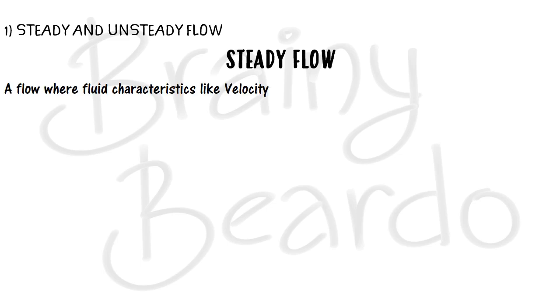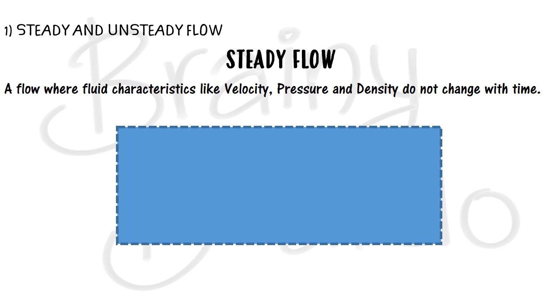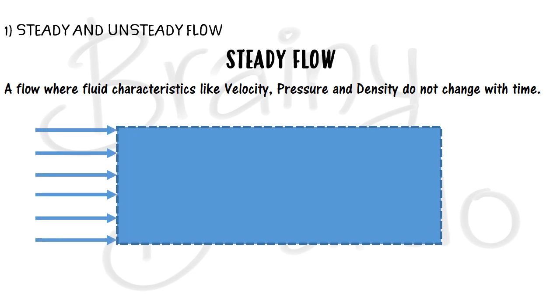The first thing we will be discussing is steady and unsteady flow. A steady flow is a flow where the fluid characteristics like velocity, pressure, density, and temperature do not change with time. To understand this, I will give a small diagram — a control volume like explained in the Eulerian method, with some fluid entering inside.